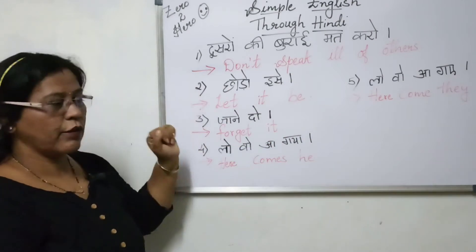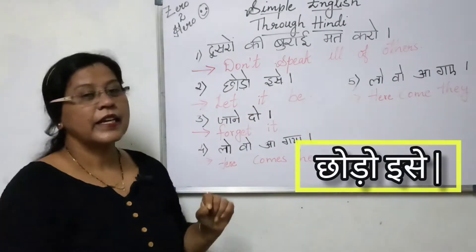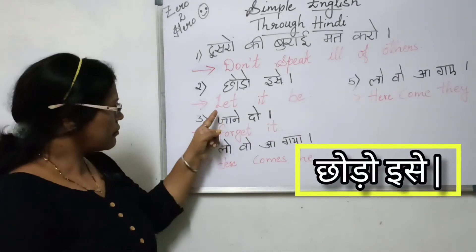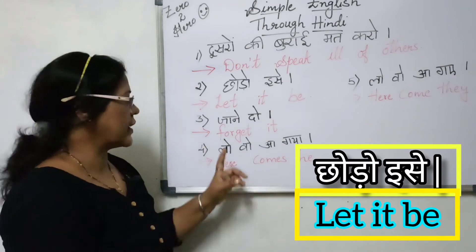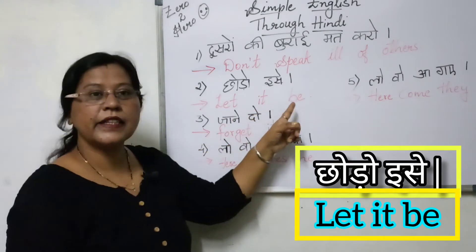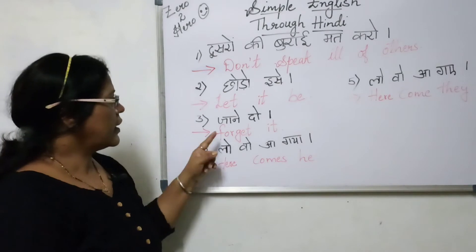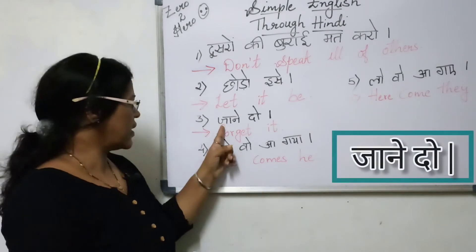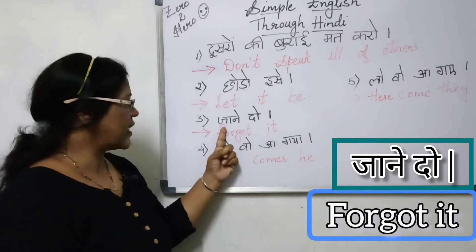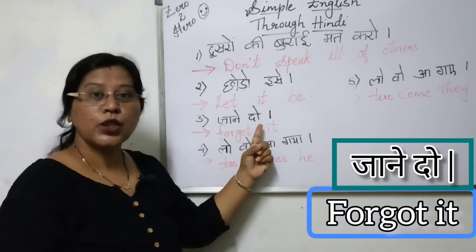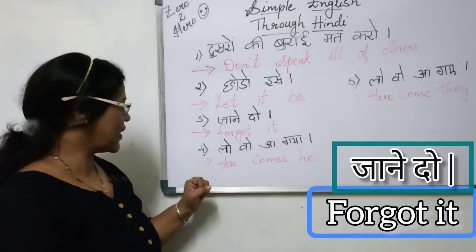Now the second sentence: 'Let it be.' And the third one is 'Jane do,' which means 'Forget it.'